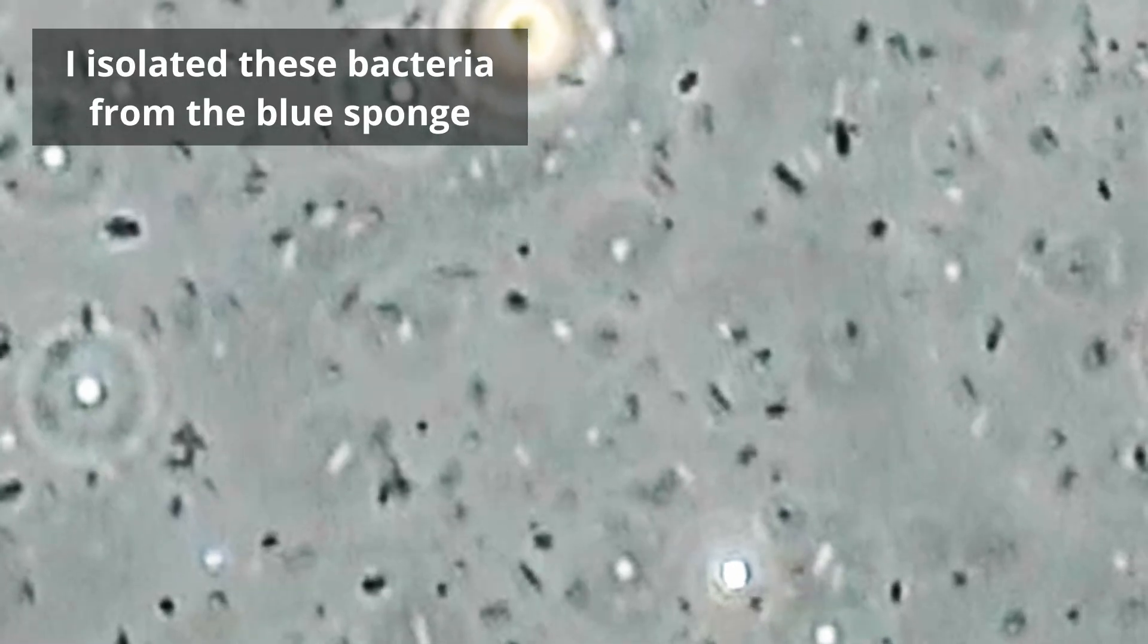So in this video I want to explain two things. First, why are there so many bacteria in the kitchen sponge in the first place? And second, what can you do to prevent bacterial growth?